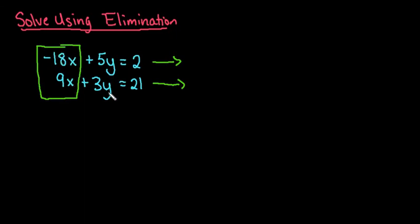Where if I try to eliminate my y's, they're both the same sign, so I would have to multiply one of them by a negative. And since I can't multiply 3 by an integer to get 5, I would have to multiply both equations, so it would give me twice as much work.